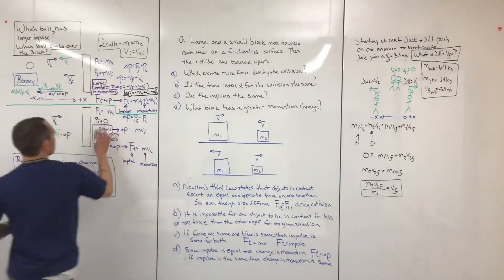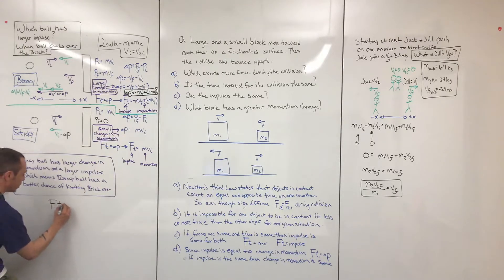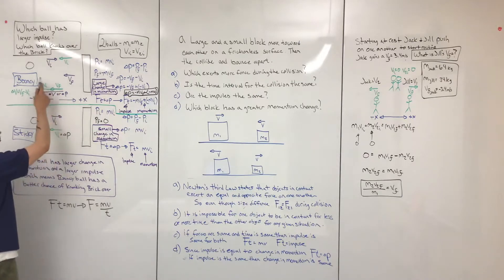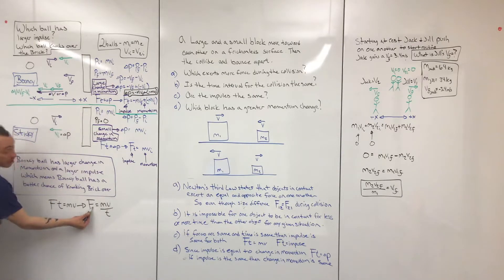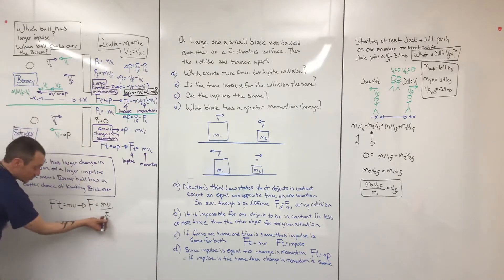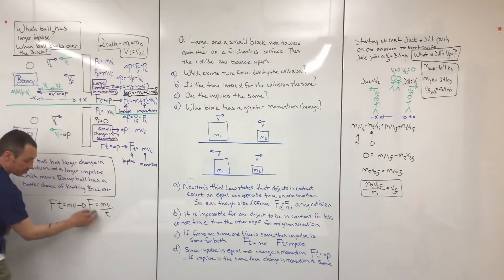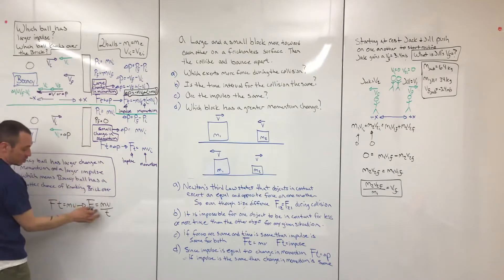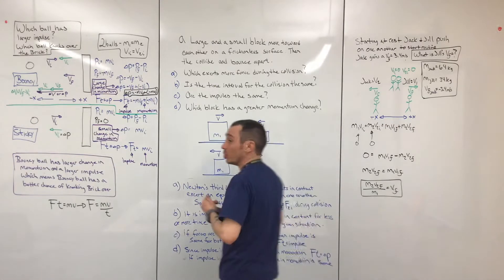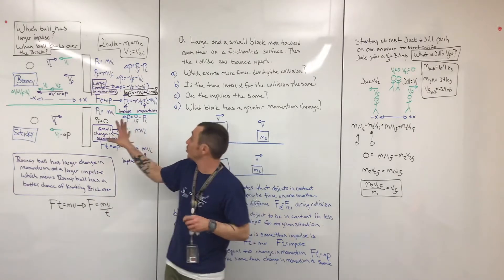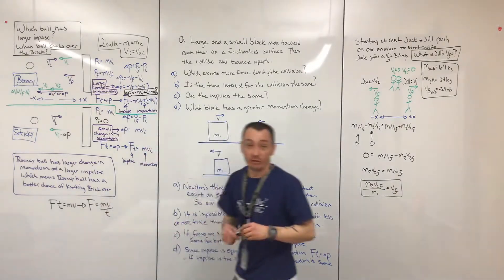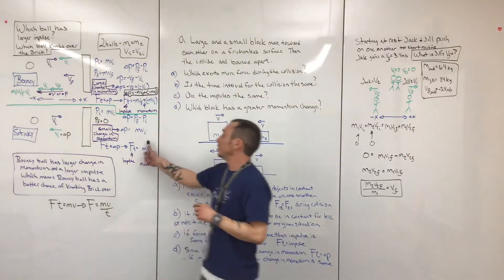A lot of students want to think about it this way: force equals mv over t, and for the bouncy ball t is really small so F is really large. For the sticky ball, t goes to infinity, so F becomes really small because of that inverse relationship — so the bouncy ball has a larger force. That's true, but we don't want you thinking about it this way. We want you looking at these situations in terms of momentum and impulse, because that's what we're trying to understand right now.